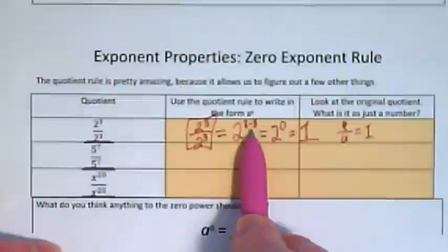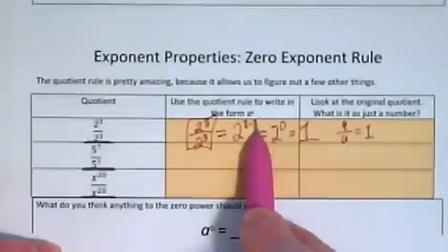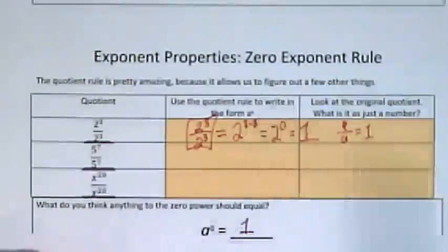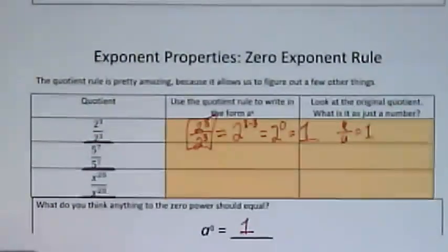Because the quotient rule has us subtracting these and getting to zero, that's what makes the zero exponent rule work. I hope that clarifies both of these.